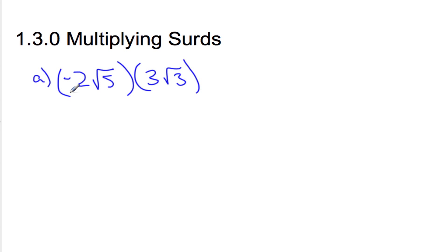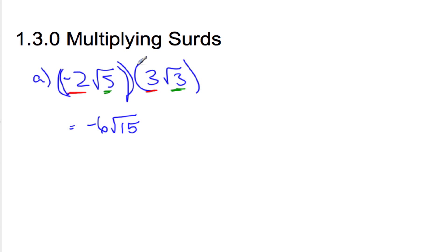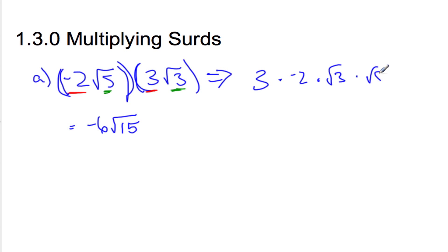When we multiply surds, we take the number that's in front of the surds and we multiply those two, which gives me negative 6. And then I take the number inside the surds and I multiply those inside the surd, which gives me the square root of 15. It's worth remembering that those brackets are there because you're multiplying two surds together, but really it's just negative 2 times root 5 times 3 times root 3. So you can just change the order of that multiplication — I could have written it 3 times negative 2 times root 3 times root 5. Because it's four numbers multiplied, and the order doesn't matter — it's all multiplication.